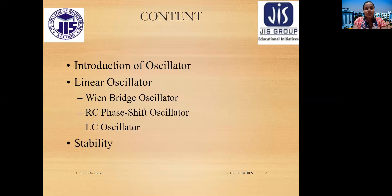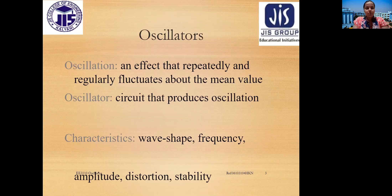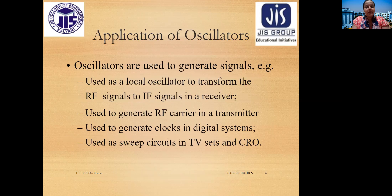In the oscillator portion we are going to cover the introduction of oscillators, linear oscillators, different types including the Wein bridge oscillator, RC phase shift oscillator, and LC oscillator, and their stability. Oscillation is something that repeatedly and regularly fluctuates about a mean value, and the circuit that produces oscillation is called an oscillator. Oscillation characteristics can include wave shape, frequency, amplitude, distortion, and stability.